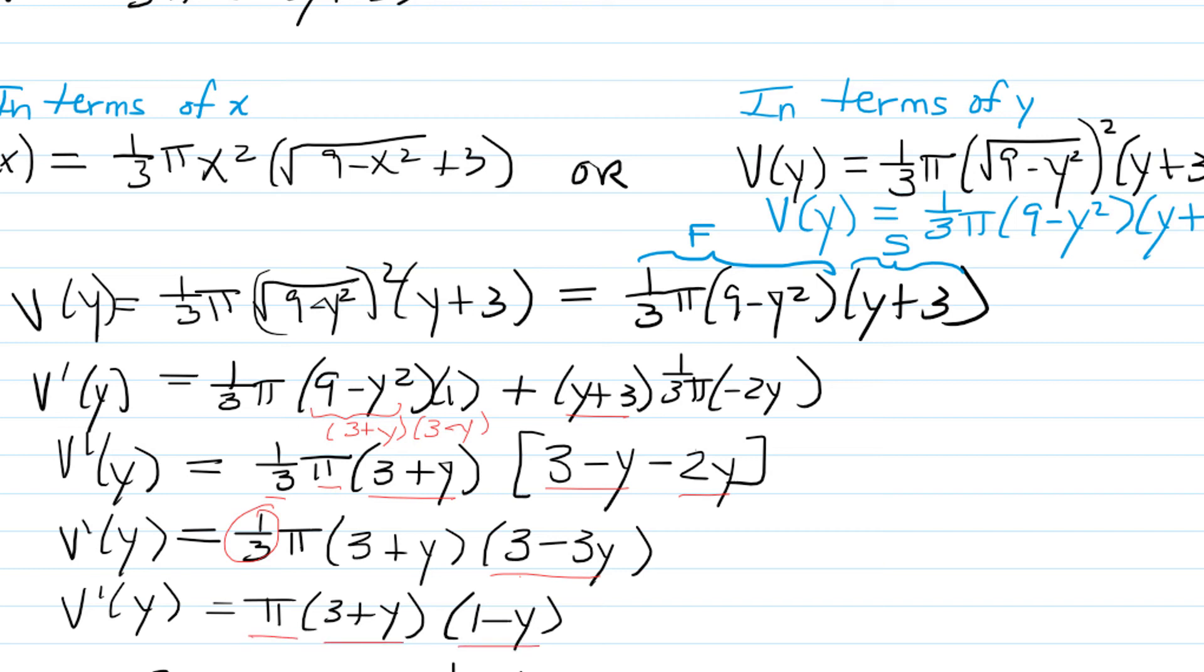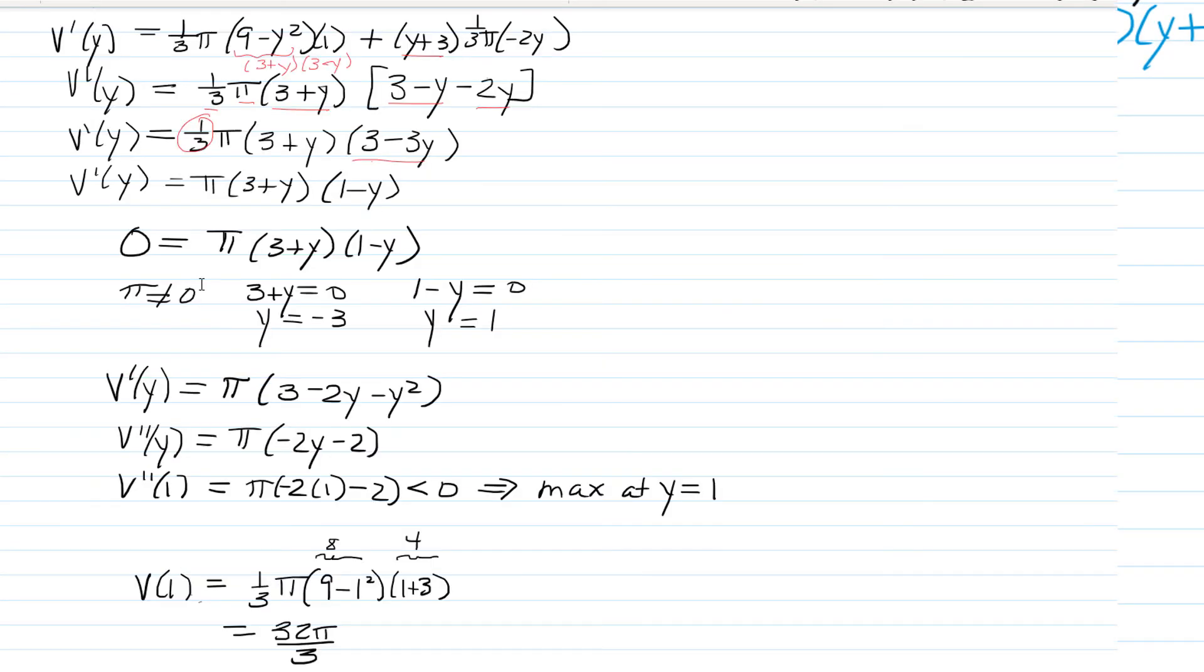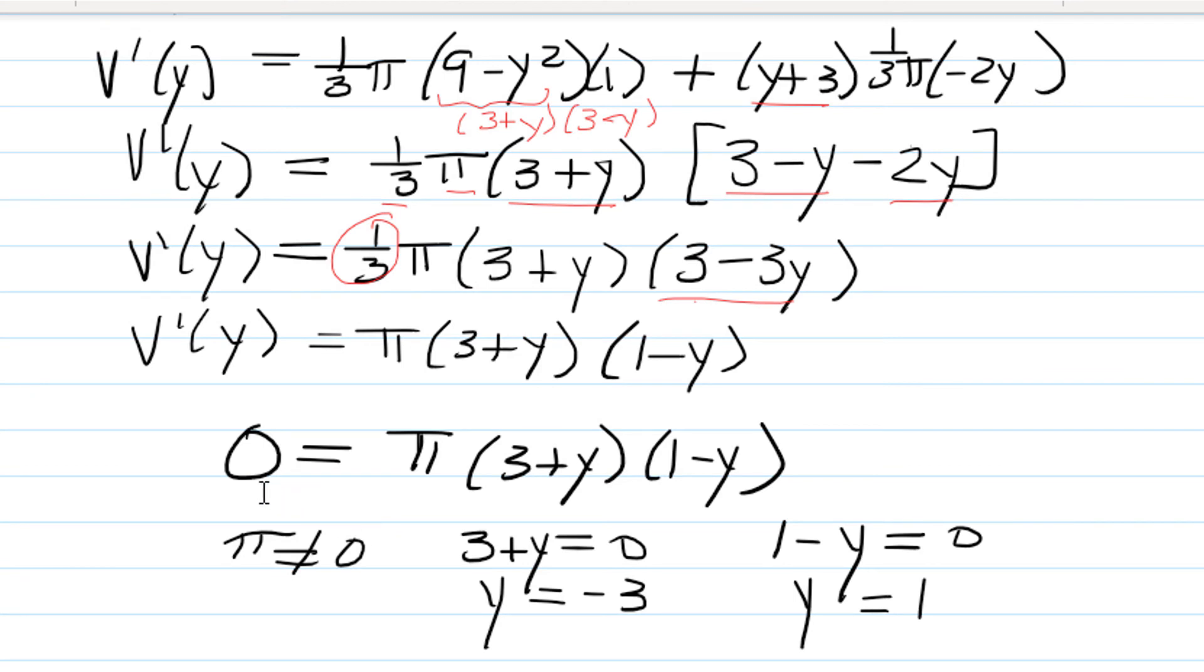So we need the critical values where the function is zero or undefined. This function won't be undefined. Setting the derivative V'(y) equal to zero to find critical values, we have either π=0, which is false, or 3+y=0, which gives y=-3, not reasonable for this problem, or 1-y=0, which gives y=1. So we really only have one potential critical value for our maximum.